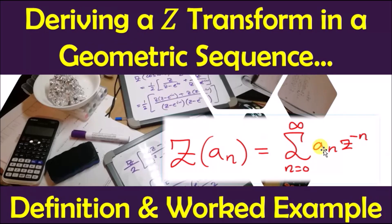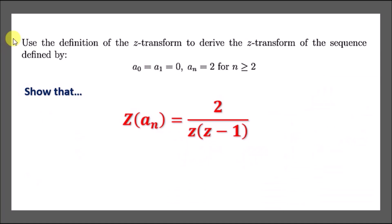Let's look at this quick example. It tells us to use the definition of the Z-transform to derive the Z-transform of the sequence defined by the following: when n is 0 and 1, the default value for a is 0, but when n is greater than or equal to 2, the a_n term is equal to 2.